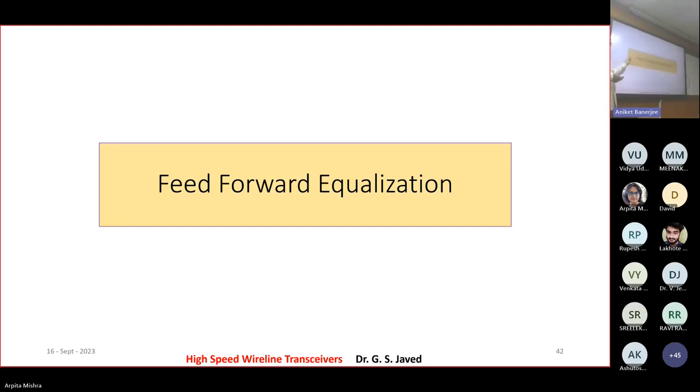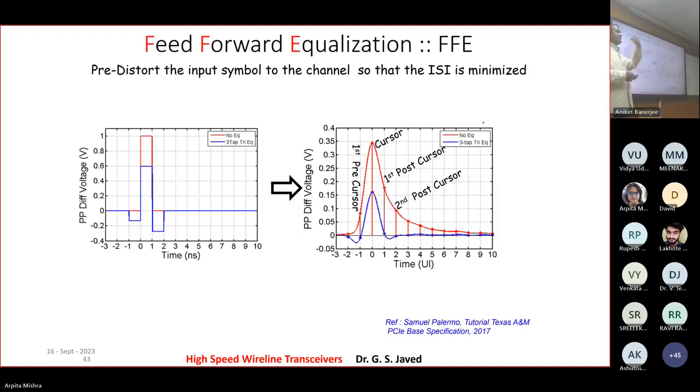We have to go up on the feed forward side, meaning how can you predictively send the data before itself so that less compensation is needed. So this is what happens. Same thing here.